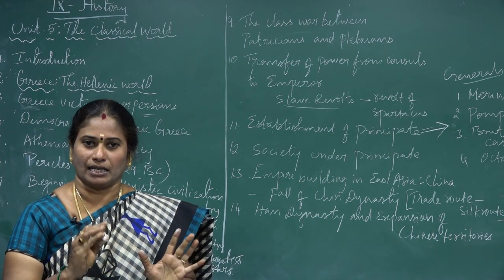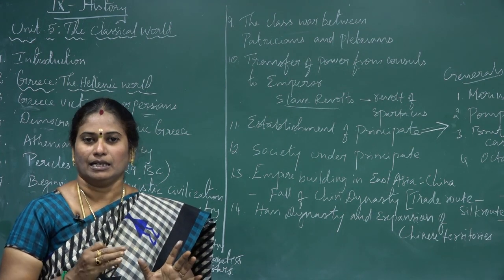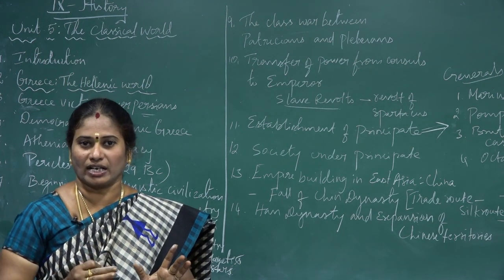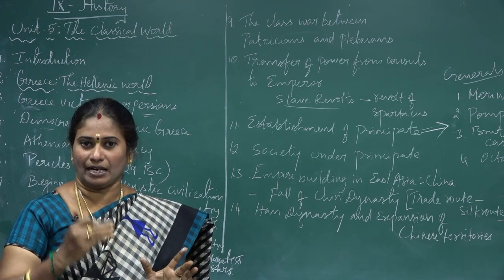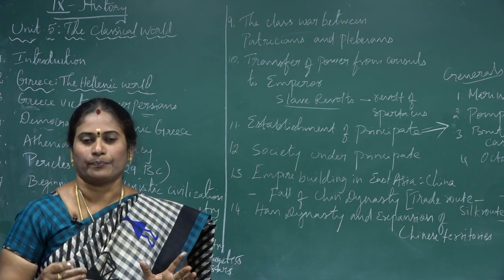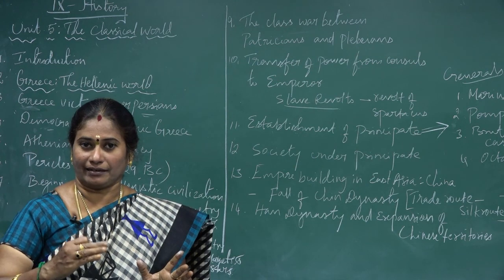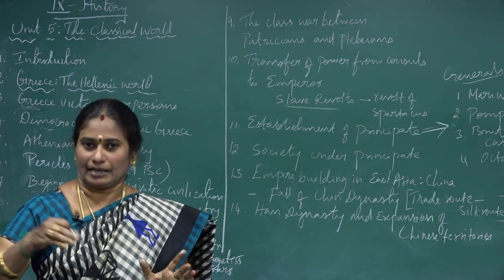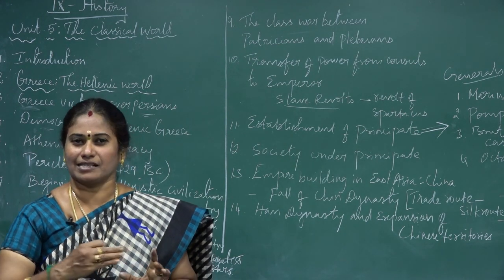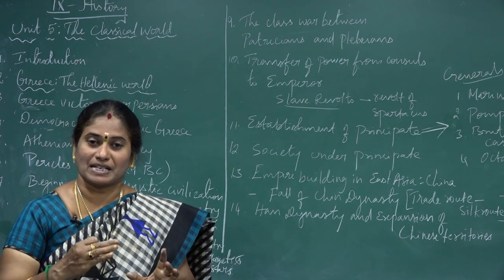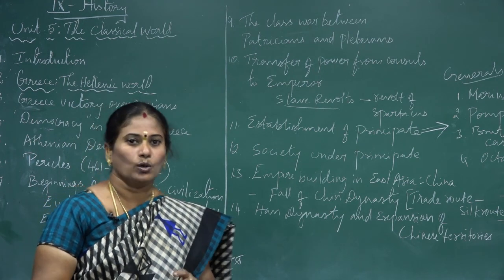Rome was located strategically, at the crossing of north-south and east-west routes. The taxes were added from the trade routes along with revenue from the agriculturists. By the late 6th century, Rome became a prosperous city.